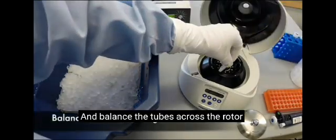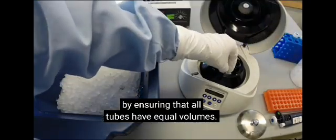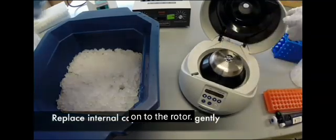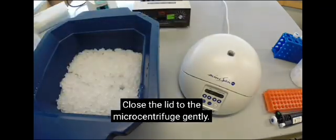Balance the tubes across the rotor by ensuring that all tubes have equal volumes. Replace the metal lid and press it until it clicks securely onto the rotor. Close the lid to the microcentrifuge gently.